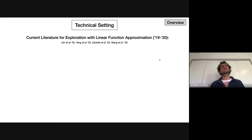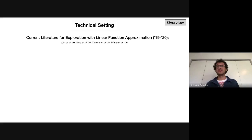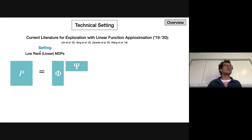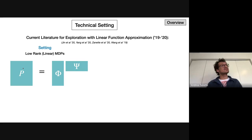What we're going to consider is the following. In the last year, there have been a lot of papers about learning and exploring with linear function approximations, and they all make some assumption about the dynamics. I like to call these low-rank MDPs — you can find them in the literature as linear MDPs. I like the word low-rank because it really highlights the structure of the transition probability matrix.